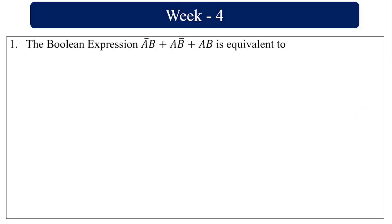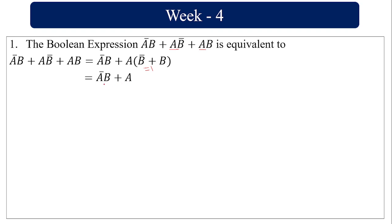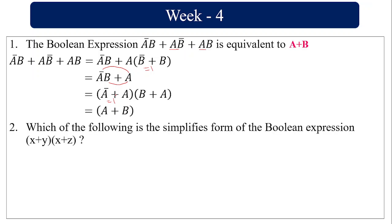The boolean expression ā b + ab̄ + ab is equivalent to what? In the last two terms, a is common, so taking a out gives b + b̄, and b + b̄ equals 1. So it becomes ā b + a. Now applying the distributive law: (ā + a)(b + a), and ā + a = 1, so the left-out value is a + b. The equivalent form is a + b.